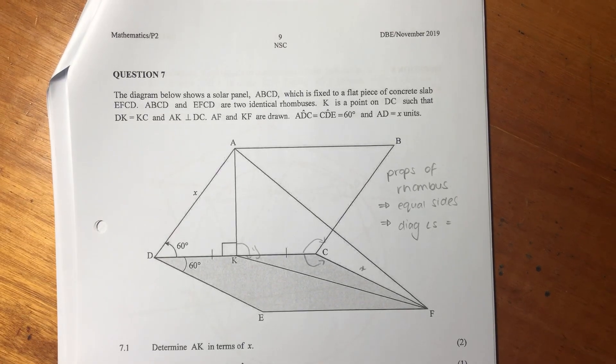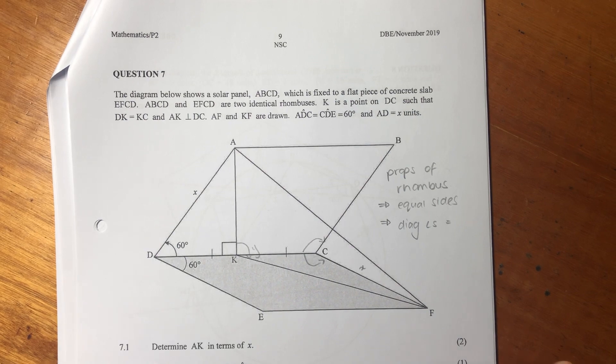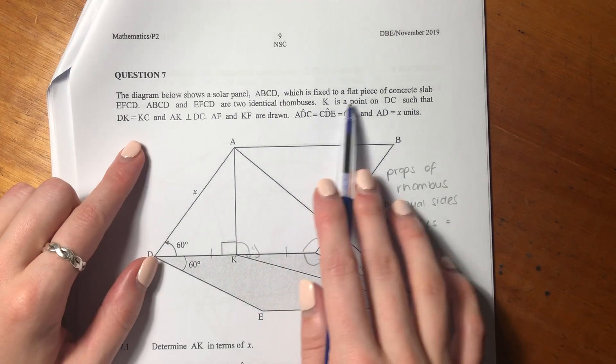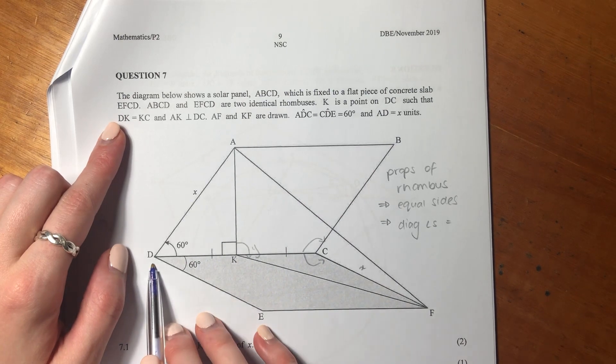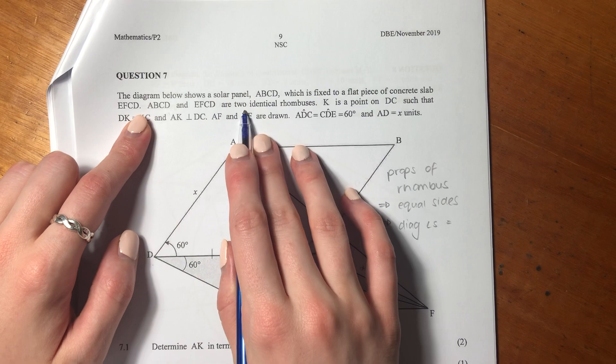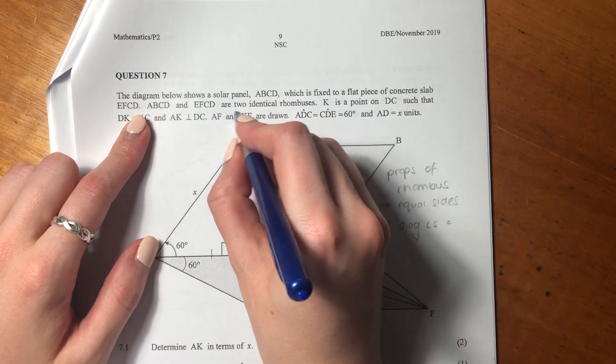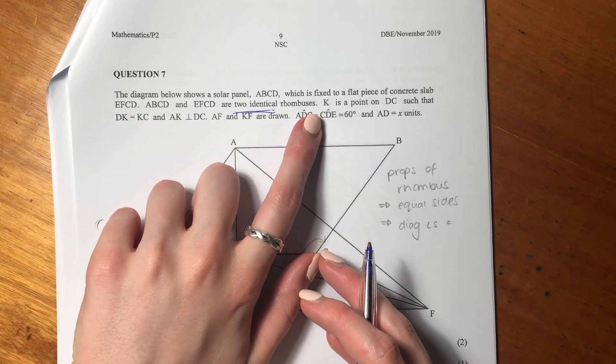Okay, question 7. The diagram below shows a solar panel, ABCD, which is fixed to a flat piece of concrete slab, EFCD. ABCD and EFCD are two identical rhombuses.